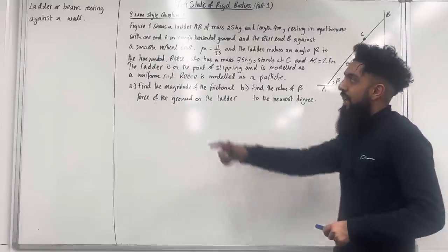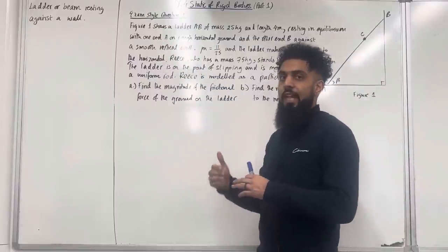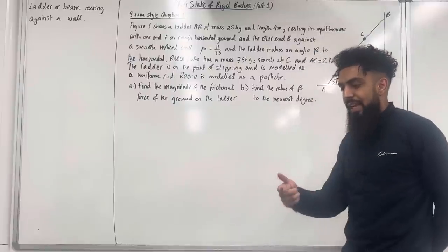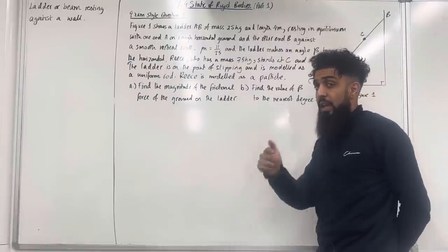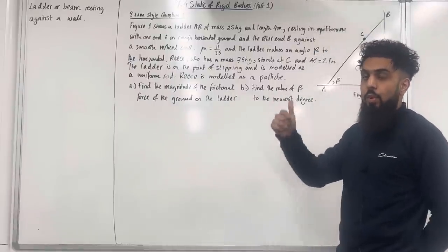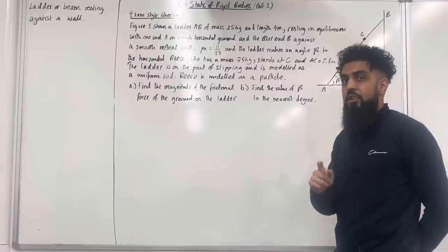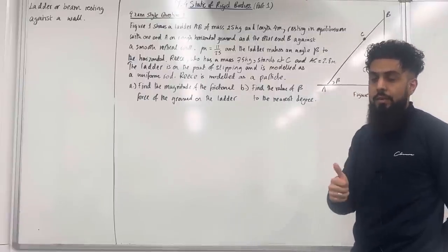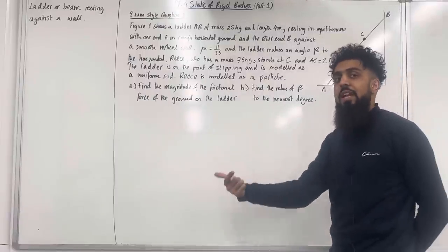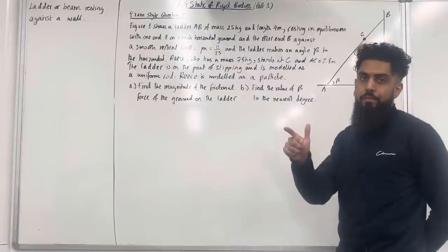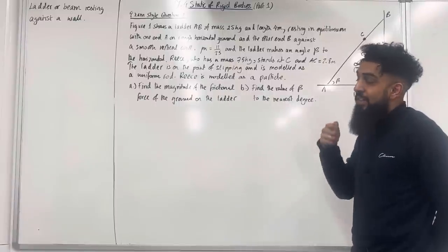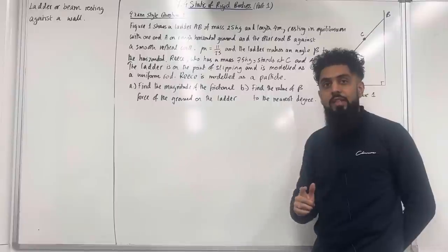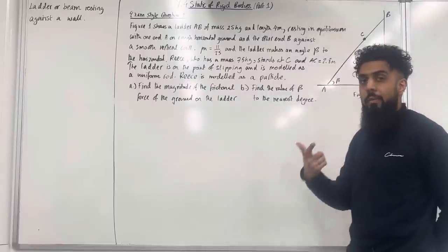So we have a ladder or beam resting against a wall. In the exam whenever you come across a ladder question or a beam question where the ladder or beam is resting against a wall, please make sure you only label the horizontal and the vertical forces, because this would make your calculation far more simple. If you were to label the parallel or the perpendicular forces your calculation will become complicated.